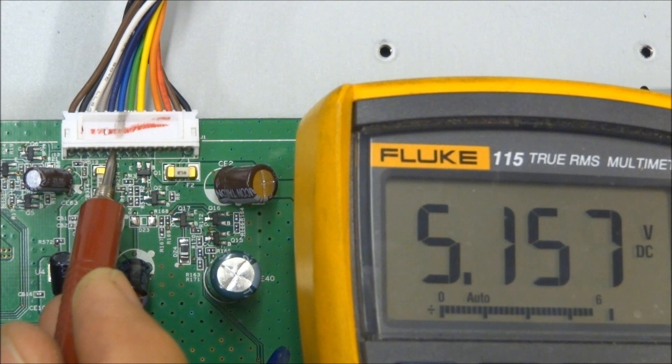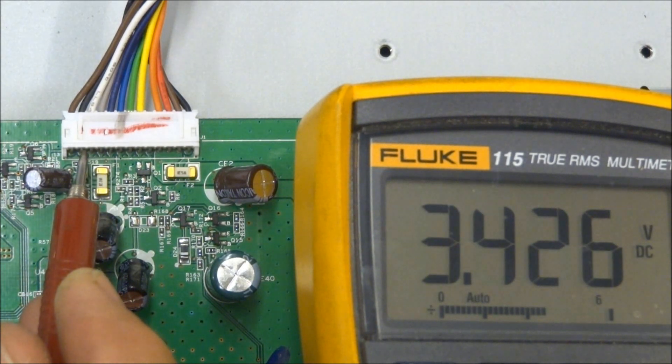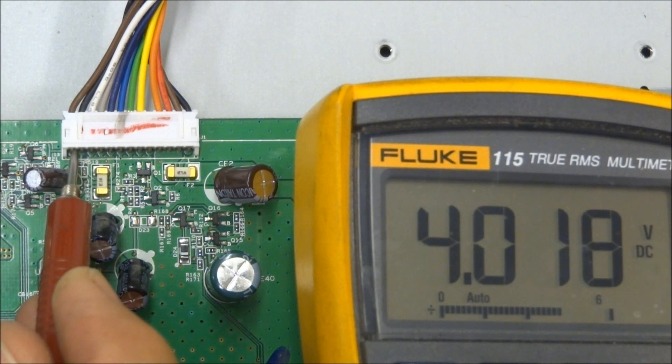It should still have 5 volts on the 5 volt standby, and that's pins 9, 10, and 11. And now on pin 12, we have 3.4 volts, which means the backlight is in its high position. If you were to turn the backlight down, you'd see this voltage go down. And then on pin 13 is the inverter on-off control, and it's high now. It's got 4 volts on it.